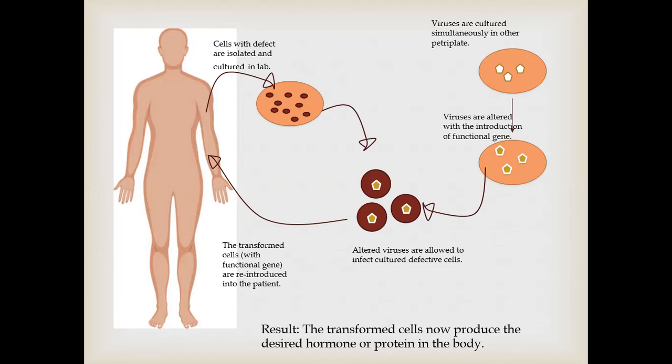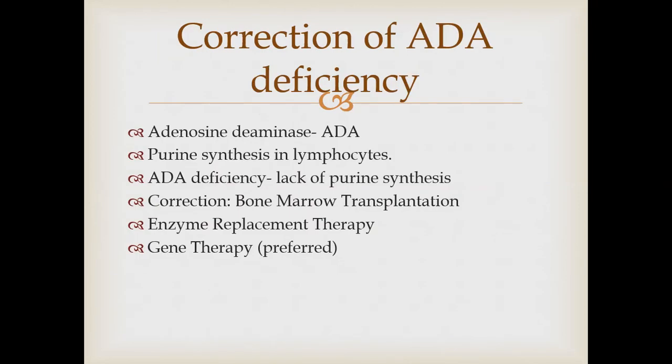The best example of gene therapy is the correction of ADA deficiency. ADA refers to an enzyme adenosine deaminase, which is responsible for purine synthesis and lymphocytes. So ADA deficiency is the lack of purine synthesis in lymphocytes. This defect can be corrected by bone marrow transplantation, enzyme replacement therapy, and gene therapy.